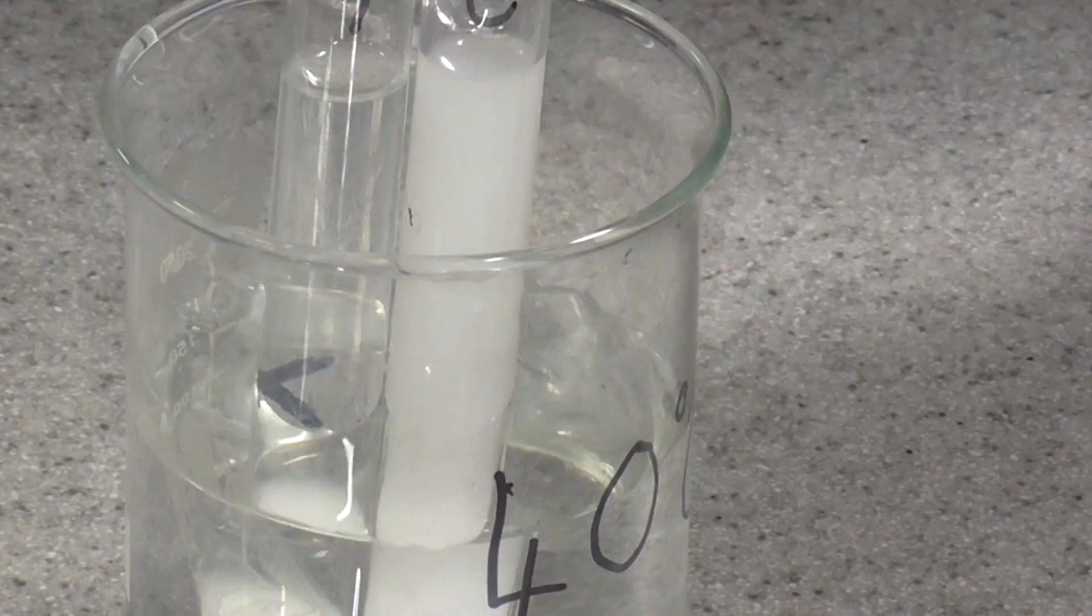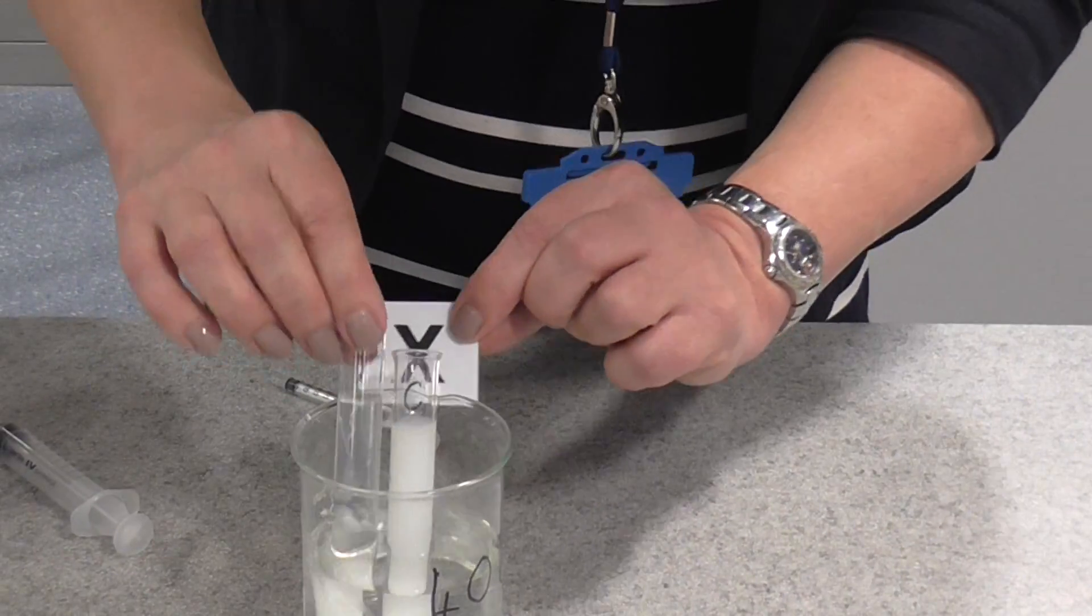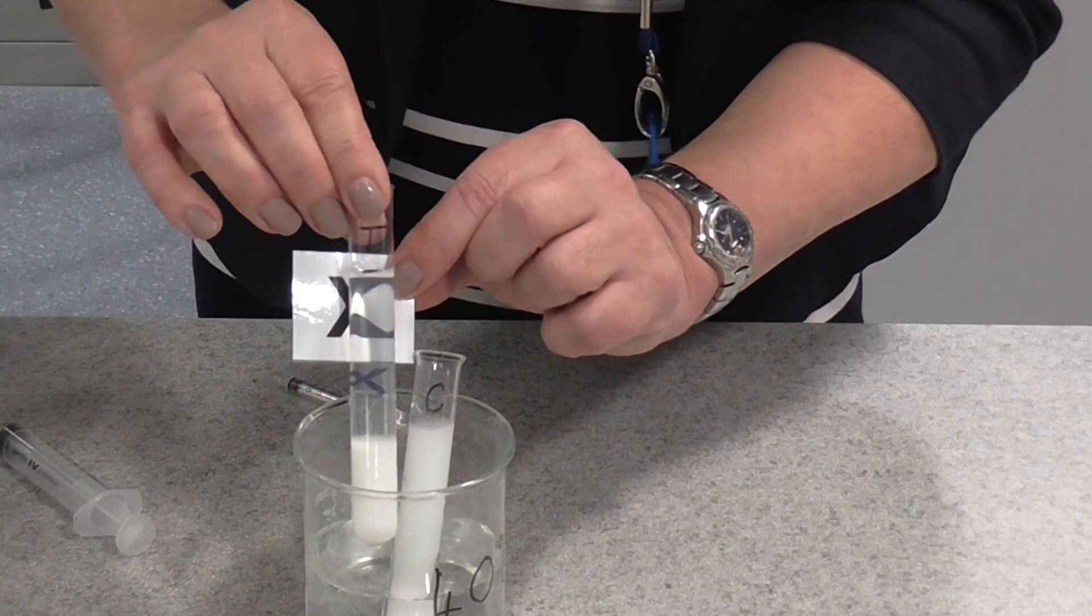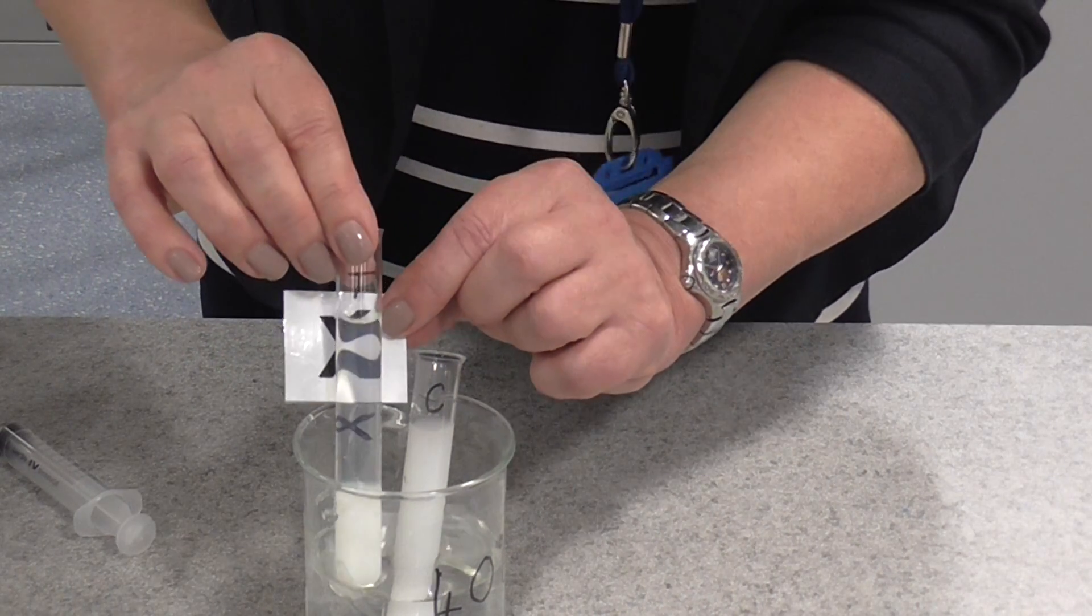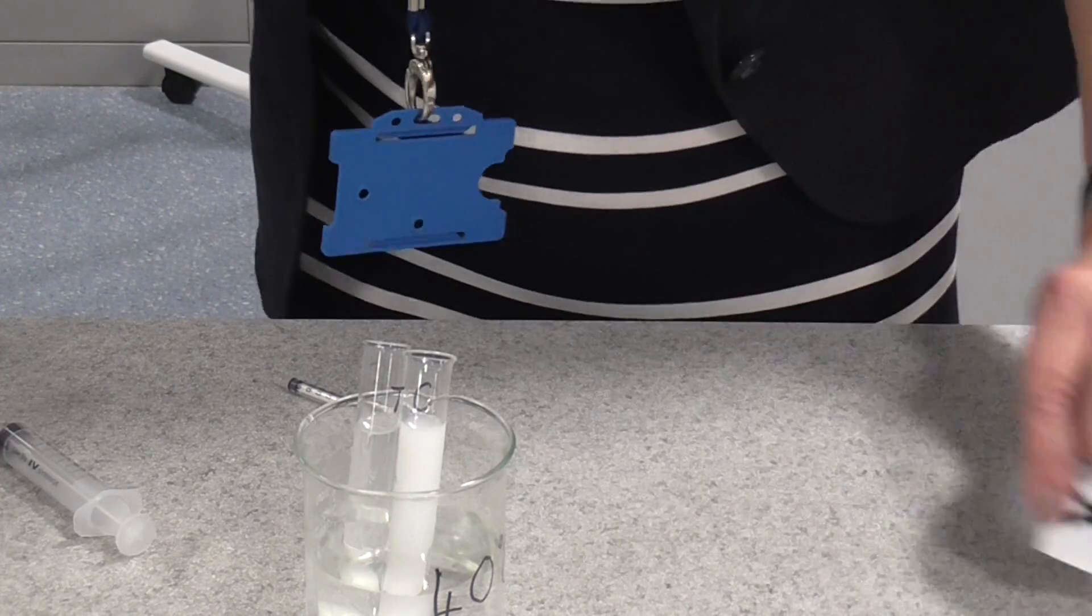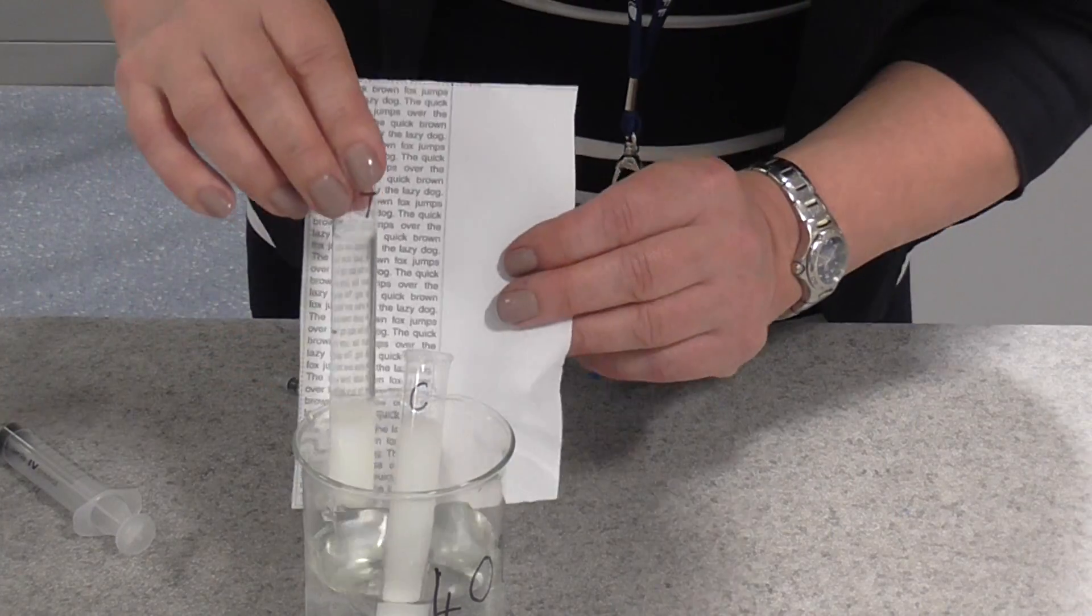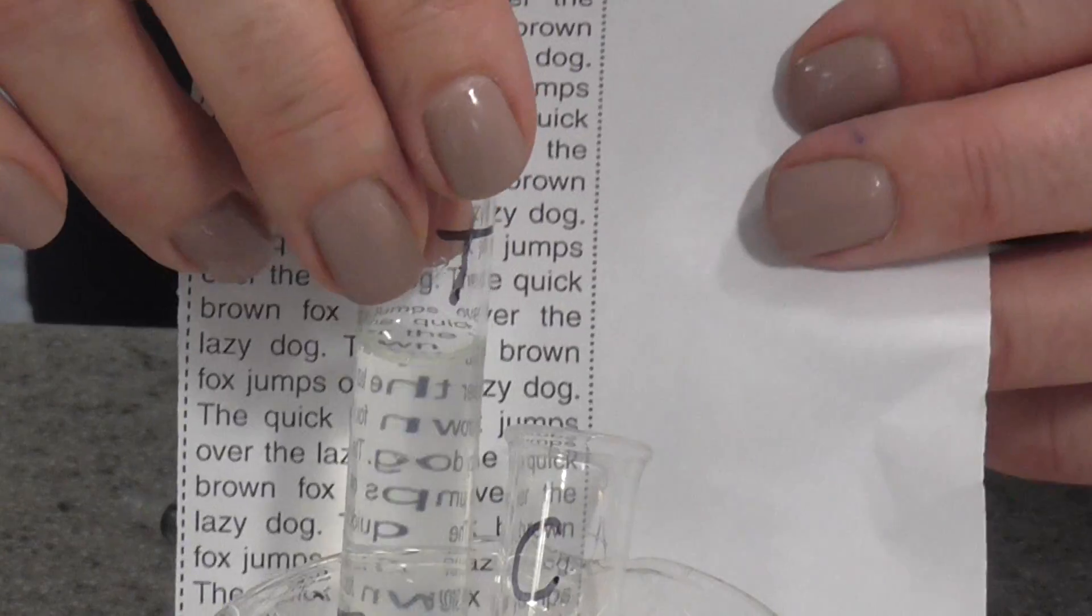There are other ways of doing this. You can actually have a printed X and clamp the tube in front of it, and time how long until it becomes visible. Or you can actually clamp your tube in front of some printed writing, and time how long until you can actually read the text. And that is the end point of this reaction.